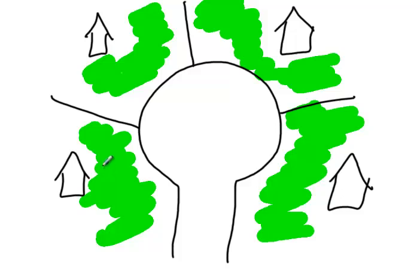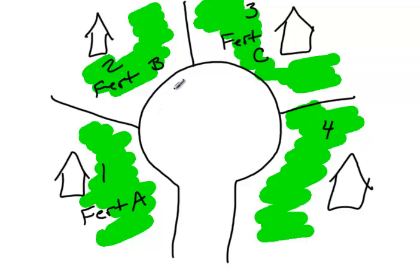So this is house number one, house number two, house number three, and house number four. And what they decide to do is they decide to try three different types of fertilizers. So they decide to use fertilizer A, fertilizer B, fertilizer C. We're not going to worry about house number four for the time being.